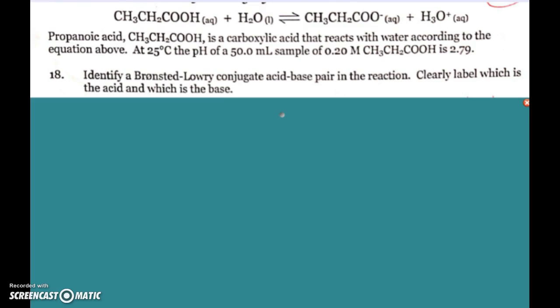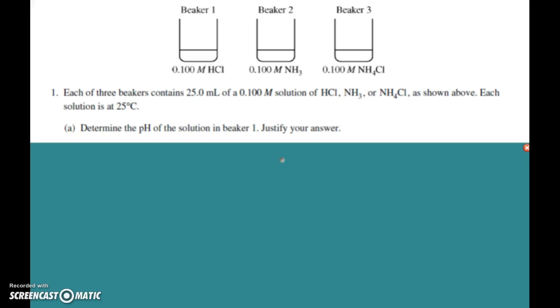We'll look at this question together, which is question number one from 2011. You see here you have three beakers, and each beaker contains 25 milliliters of a 0.100 M solution. In the first beaker you have hydrochloric acid, in the second beaker you have ammonia, and in the third beaker you have ammonium chloride.